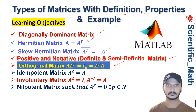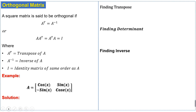Orthogonal matrix definition: a square matrix is said to be an orthogonal matrix if the transpose of the matrix is equal to its inverse. We have another definition: if the product of matrix A with its transpose is equal to the product of A-transpose with A, which is equal to the identity matrix.